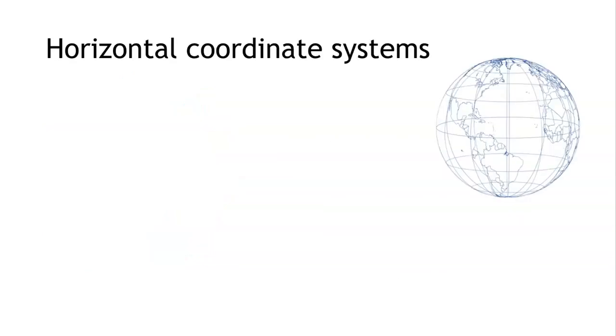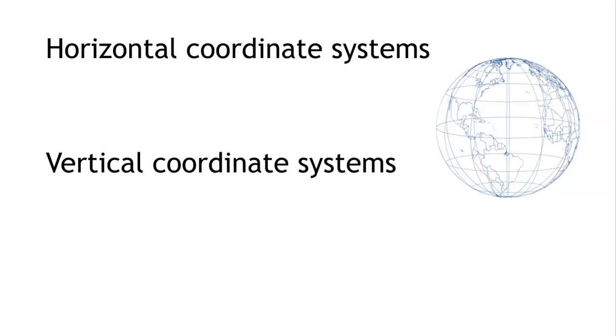As far as coordinate systems are concerned, there are horizontal coordinate systems and vertical coordinate systems. The geographical coordinate system, projected systems, or local systems are categories under the horizontal coordinate systems.